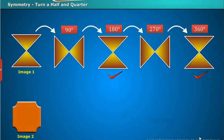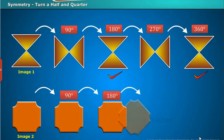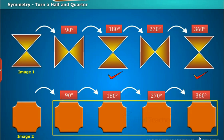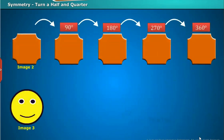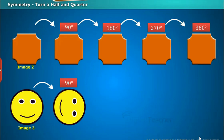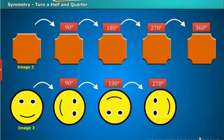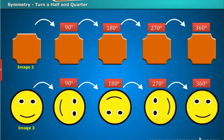Similarly, observe the second image: when rotated at 90, 180, 270, and 360 degrees, it remains the same, so it has a rotational symmetry of maximum angle 90 degrees. For the third image — a face — when rotated 90 degrees it is not symmetrical; at 180 degrees the eyes are at the bottom and mouth at the top, so it is not symmetrical; at 270 degrees also not symmetrical; and at 360 degrees it looks the same as the original but that doesn't count. So this image has no rotational symmetry.